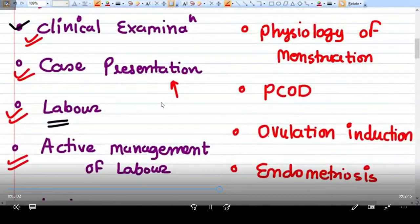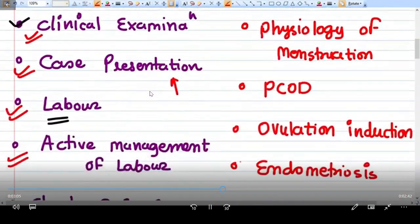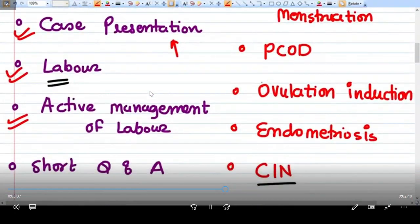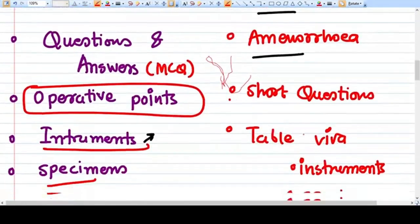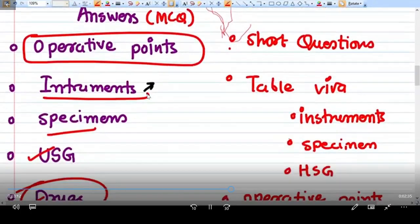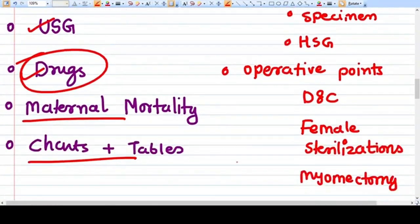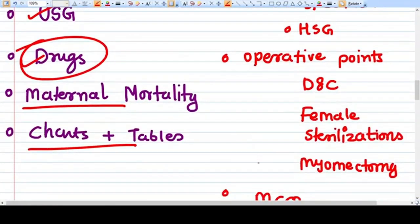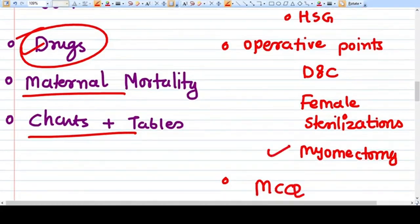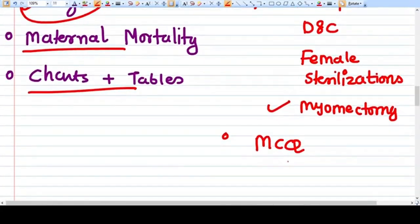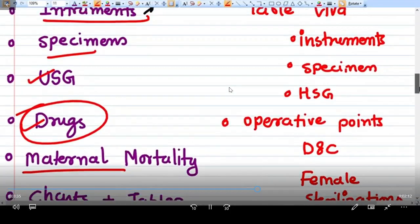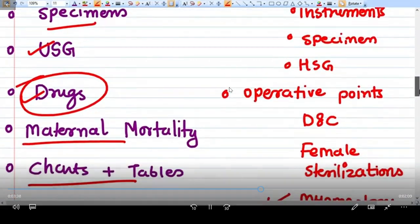Same with the gynecology part: case presentations, various important points like PCOD, endometriosis, amenorrhea, short questions, table viva, instruments, specimens, hysterosalpingography, how to read hysterosalpingography, operative points like you need to identify or describe the various stages of dilatation and curettage, myomectomy, laparoscopic myomectomy, and it will also include multiple choice questions. These particular points we are going to discuss in our Viva series.